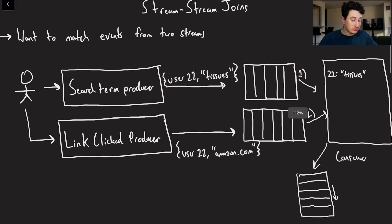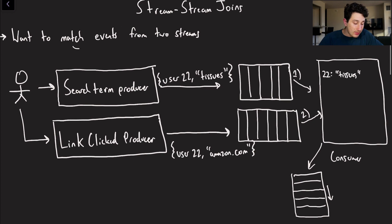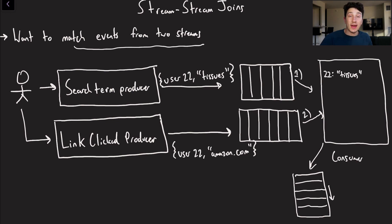So the first is going to be stream-stream joins. So the unique thing about these are that we're actually matching events from two streams. And the example that I have absolutely plagiarized from Designing Data-Intensive Applications is basically one where we've got one source or one producer node that is publishing a bunch of search terms. Let's imagine I go into Google and I type something like tissues. And a second that every single time I click a link from Google is going to publish the link that I clicked so that we can later do some aggregation down the line and look at how certain search terms and links interact with one another.